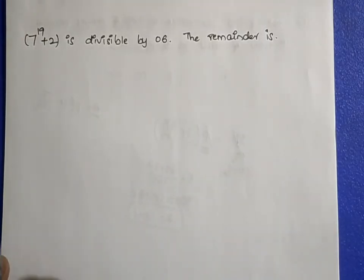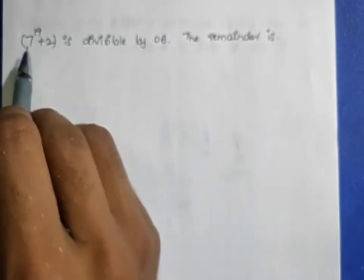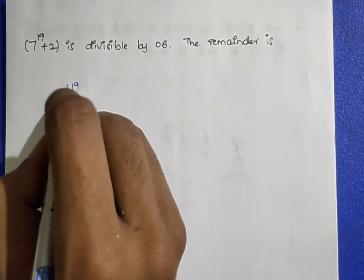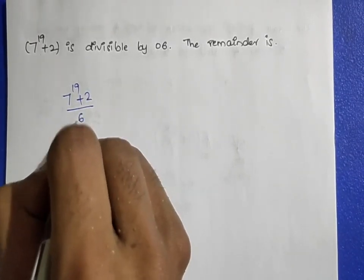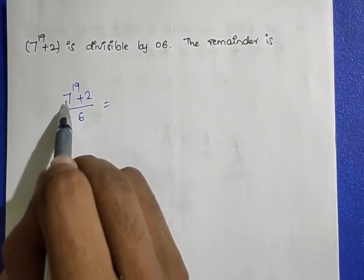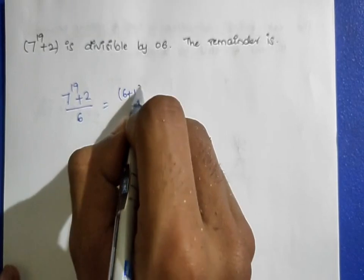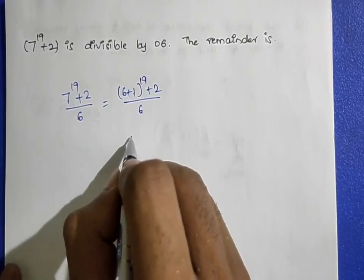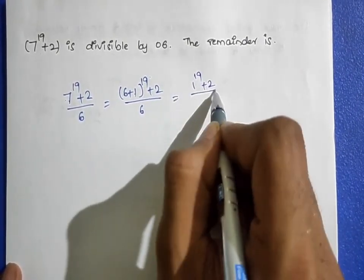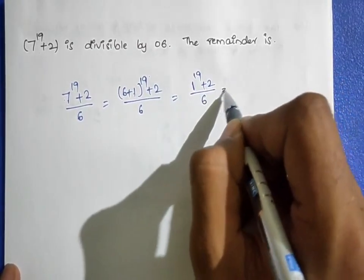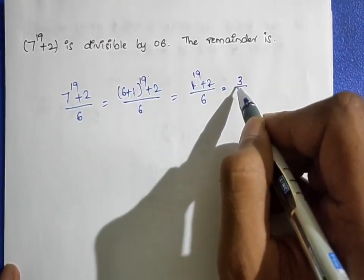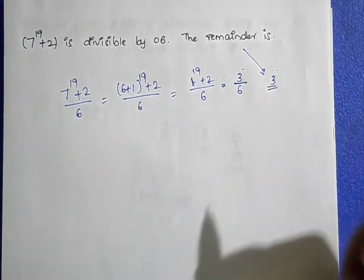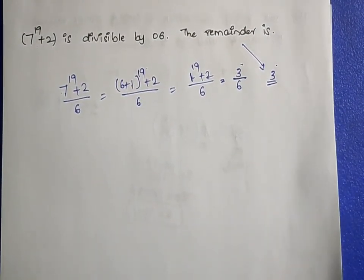Next question: 7 power 19 plus 2 is divisible by 6. We write 7 as (6 + 1), so (6 + 1)^19 + 2, divided by 6. The 6 terms cancel, leaving 1^19 + 2 = 1 + 2 = 3. So the remainder is 3.